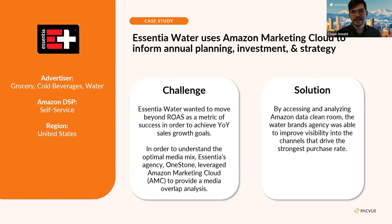Essentia has been advertising on Amazon for quite some time and historically leveraged traditional pay-per-click advertising to drive sales and awareness. In 2021, Essentia began spending against DSP, and at the time, DSP lived in an entirely separate silo. We optimized and reported on search advertising and DSP advertising in completely separate buckets.